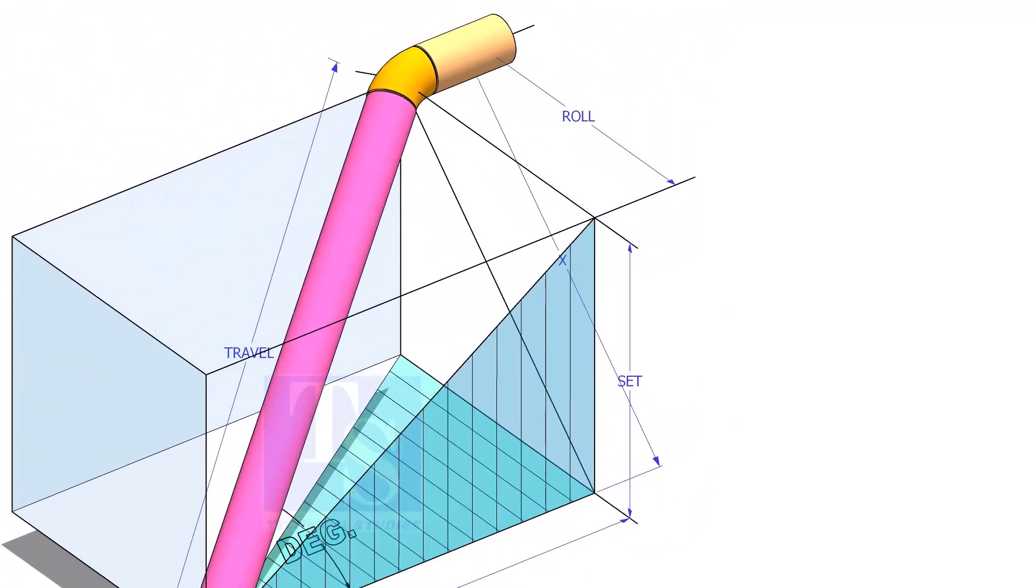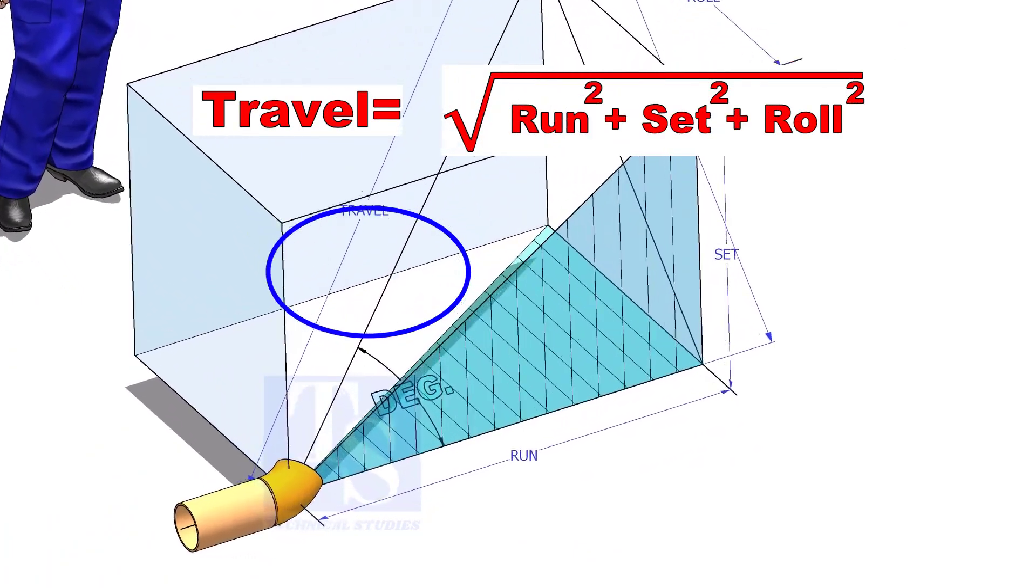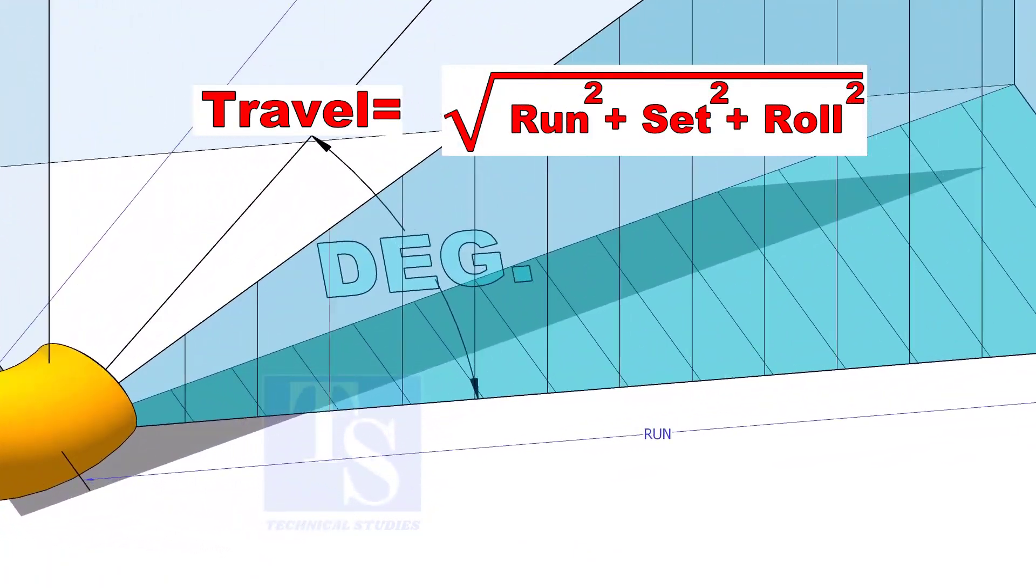The formula to calculate the travel length is the square root of run squared plus set squared plus roll squared.